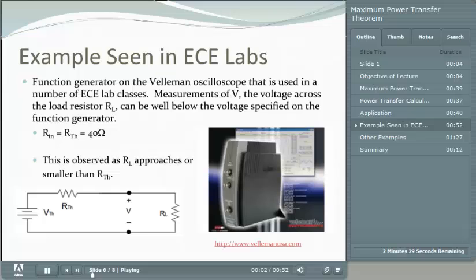In some of our ECE labs, we use a function generator that's built by Velomon. A function generator is just a voltage source that has the ability to put out different time-varying signals. The input impedance for the Velomon function generator happens to be 40 ohms.